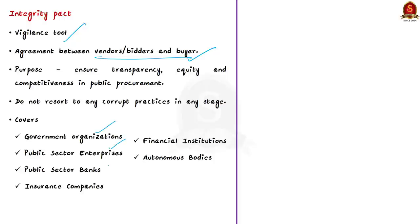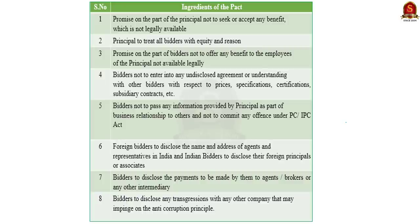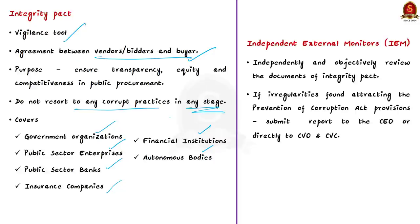The Integrity Pact commits persons or officials from both the bidder side and the buyer side to not resort to any corrupt practices at any stage of the contract. In this way, the pact aims to ensure transparency, equity, and competitiveness in public procurement. Independent External Monitors independently and objectively review documents related to this Integrity Pact and determine if the parties have complied with their obligations under the pact.